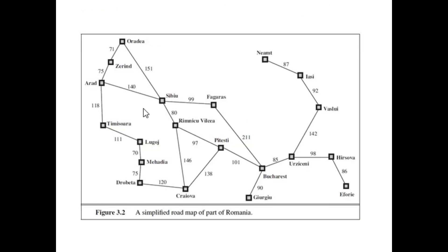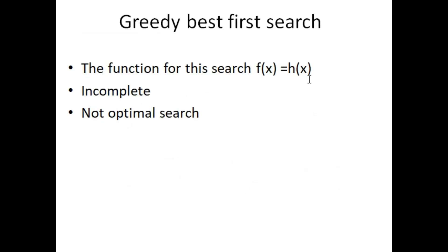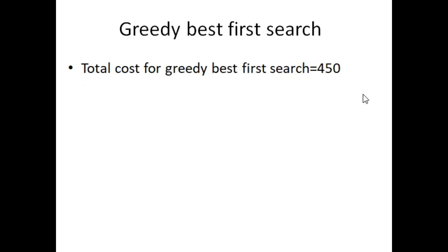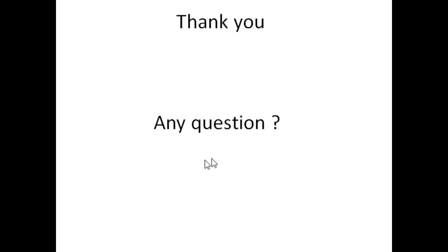In this video, we discussed the road map problem to reach from initial state A to goal state B using greedy best first search, which uses the heuristic value as its function. This search is not optimal. If you have any questions, you can send me an email and I will reply. Thank you for watching this video.